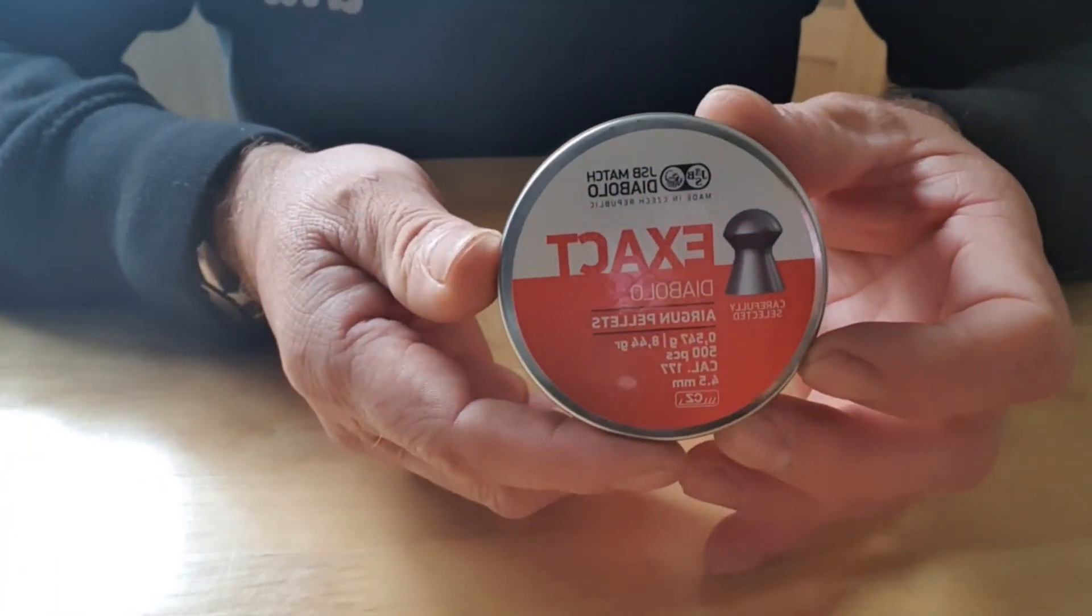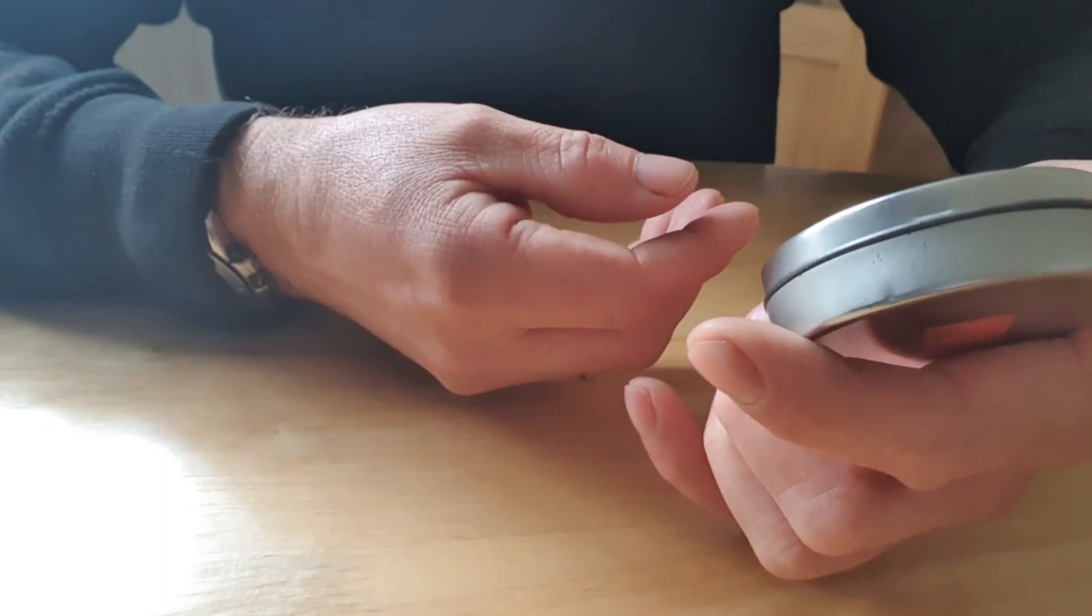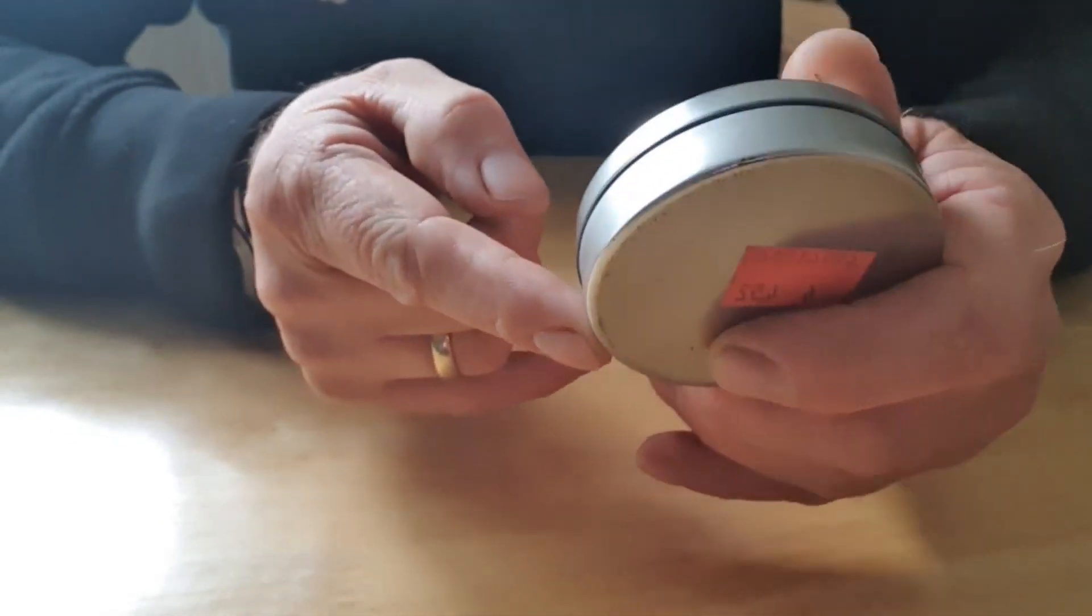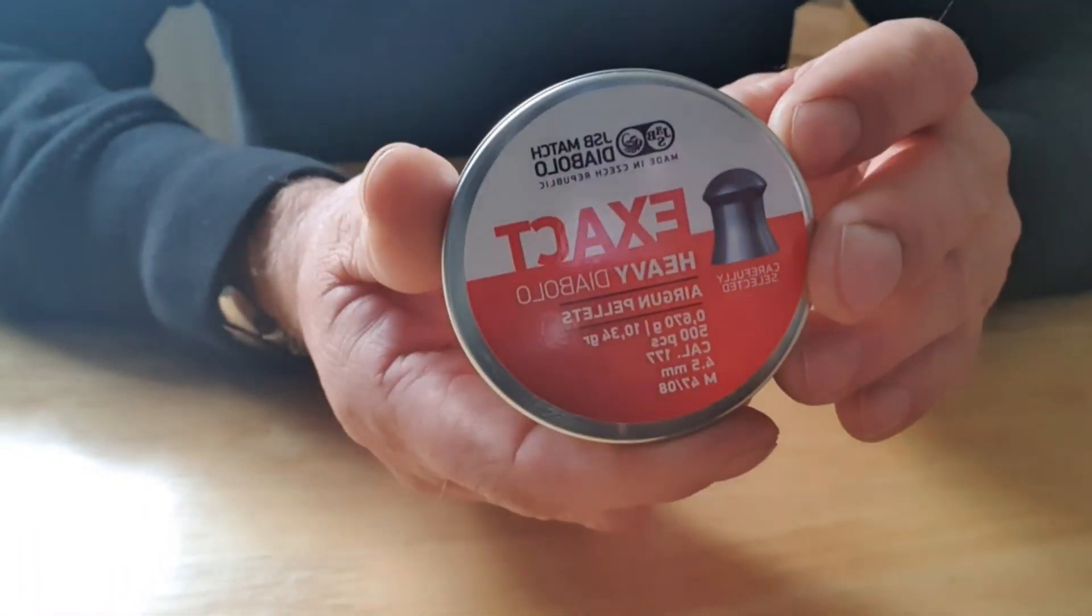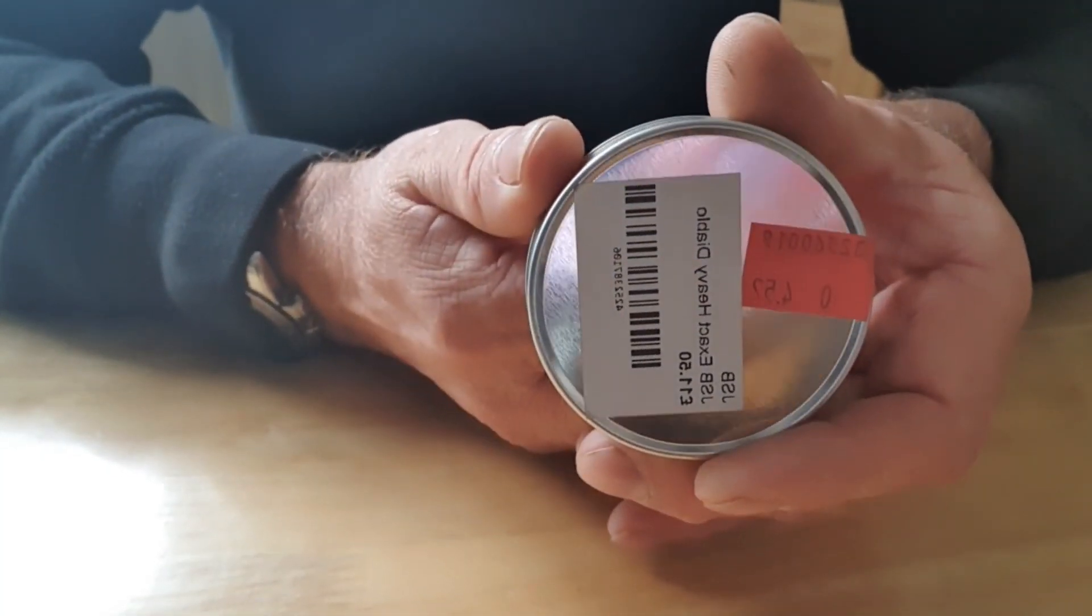Tin of JSB Exacts. These ones are 8.44 grains, 4.52. Tin of JSB Evies, 10.3. Again 4.52.